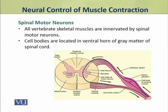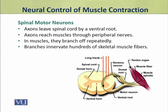All vertebrate skeletal muscles are innervated by spinal motor neurons. The cell bodies of spinal motor neurons are located in the ventral horn of the grey matter of the spinal cord. The axons of these spinal motor neurons leave through the ventral root and reach muscles through peripheral nerves.